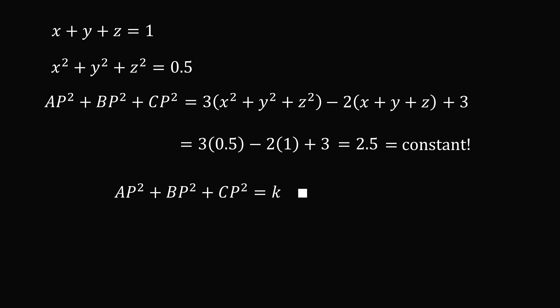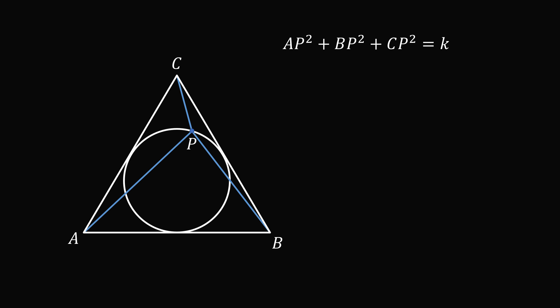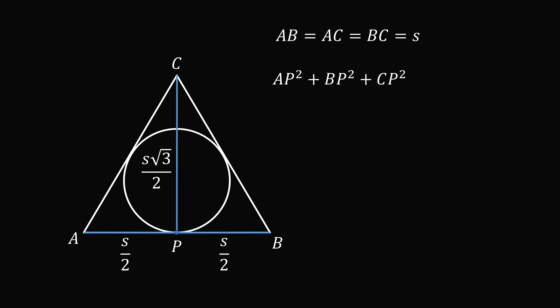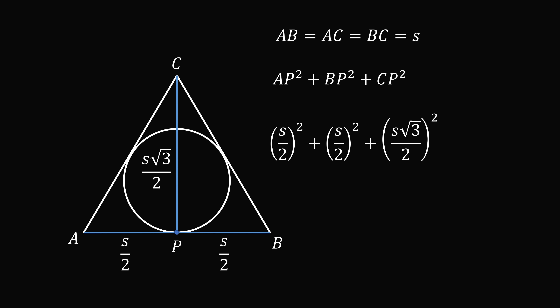Now, what is the value of K? Let's go back to our problem. We know the sum of the squared distances equals K, so we can pick a convenient point P. Suppose the equilateral triangle has AB equal to AC equal to BC equal to some side length S. We'll let P be the midpoint of AB. Then AP equals S over 2, BP equals S over 2, and CP equals the altitude, which is S root 3 over 2, because triangle APC is a 30-60-90 right triangle. Computing AP squared plus BP squared plus CP squared: (S/2)² plus (S/2)² plus (S√3/2)² equals S²/4 plus S²/4 plus 3S²/4, which equals 5S squared over 4.